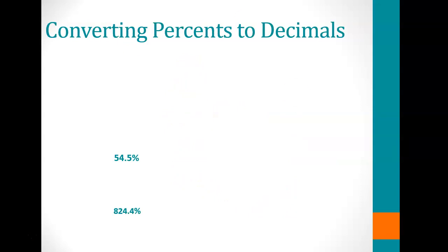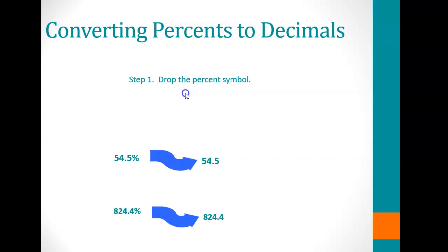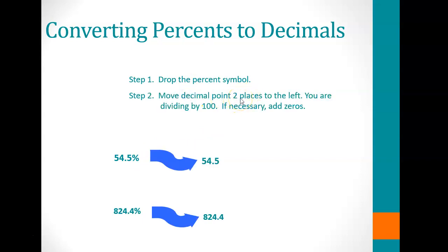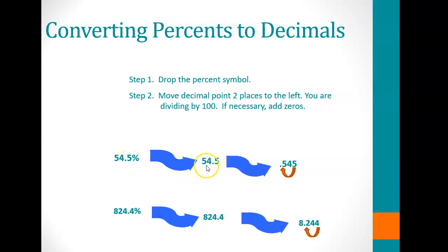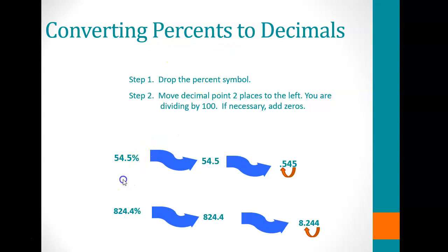Converting percent to decimal: you go the other way. To go from a percent to a decimal, drop the percent symbol and move the decimal two spaces to the left. For example, 54.5% becomes 0.545, and 824.4% becomes 8.244 as a decimal.